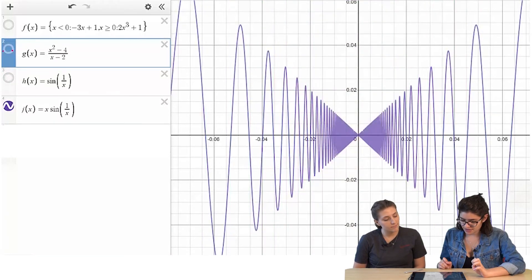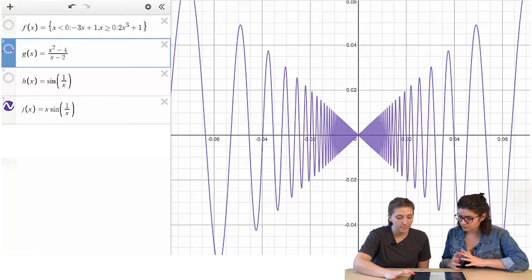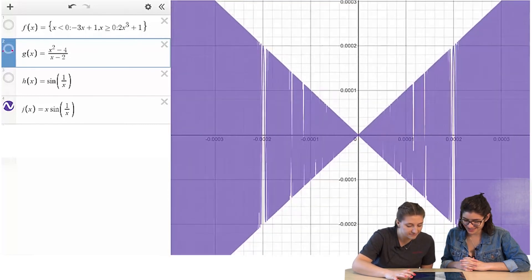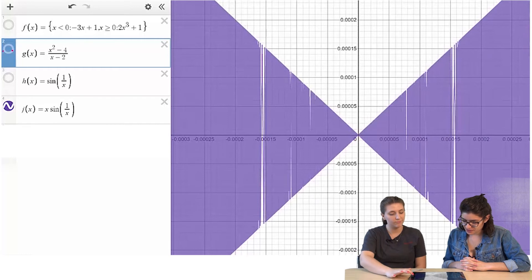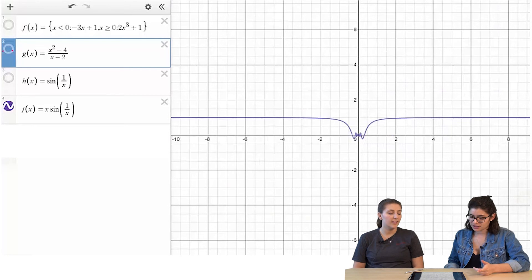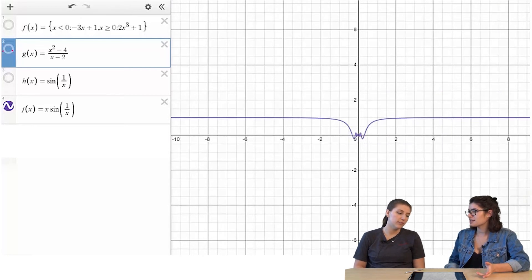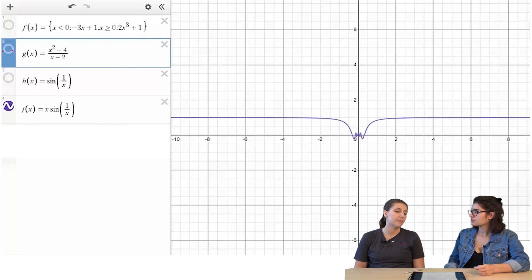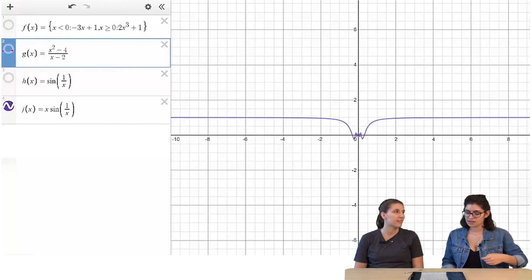So now this one is x times the sine of 1 over x. All right. And can we zoom in again? Yeah. It does nothing. That's not going to help. Okay. Well, I mean, it's the same idea, I feel like, from the one before it, because you're still just, if you divide by zero, you'll have an indeterminant, so you just can't do it. Yeah. I kind of agree with that, but at the same time, we're multiplying it by x. And when you said when x is equal to zero, we're doing zero times something, so wouldn't it be zero? So I think it's continuous.